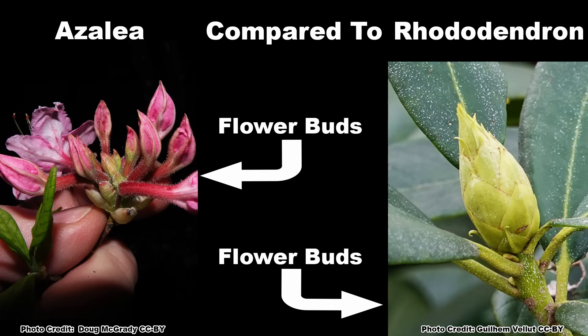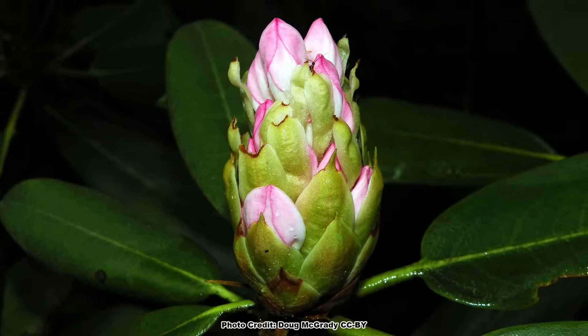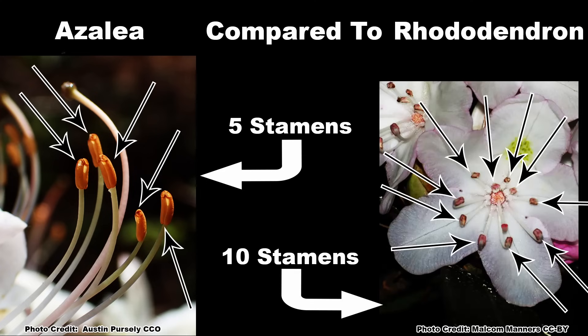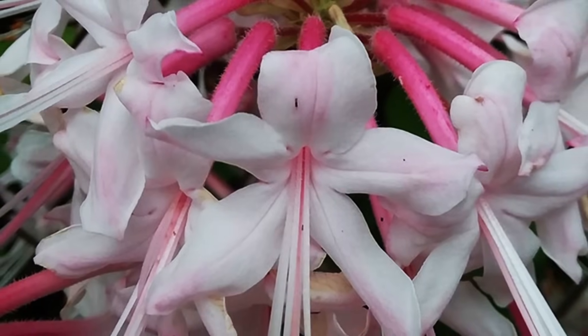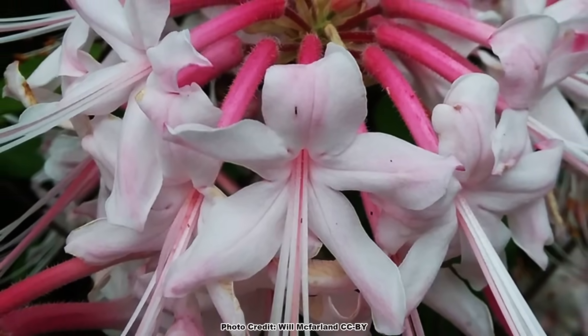Both azaleas and rhododendrons have flower buds that are grouped tightly together, and they can look like one giant flower bud as they open. Looking closely at the flowers will reveal that azaleas have 5 stamens — the male reproductive part of the flower — and the rhododendrons have 10 stamens. Since the flowers of both groups are large and showy, these parts are quite easy to see and count.